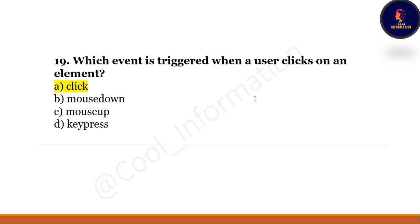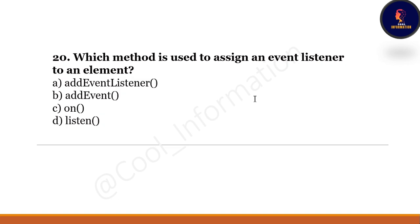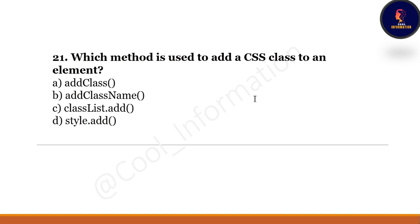Next question: Which method is used to assign an event listener to an element? Option A: addEventListener. Option B: addEvent. Option C: on. Option D: mission. The correct option is A — addEventListener. Next question: Which method is used to add a CSS class to an element? Option A: addClass. Option B: addClassName. Option C: classList.add. Option D: style.add. The correct option is A — addClass.